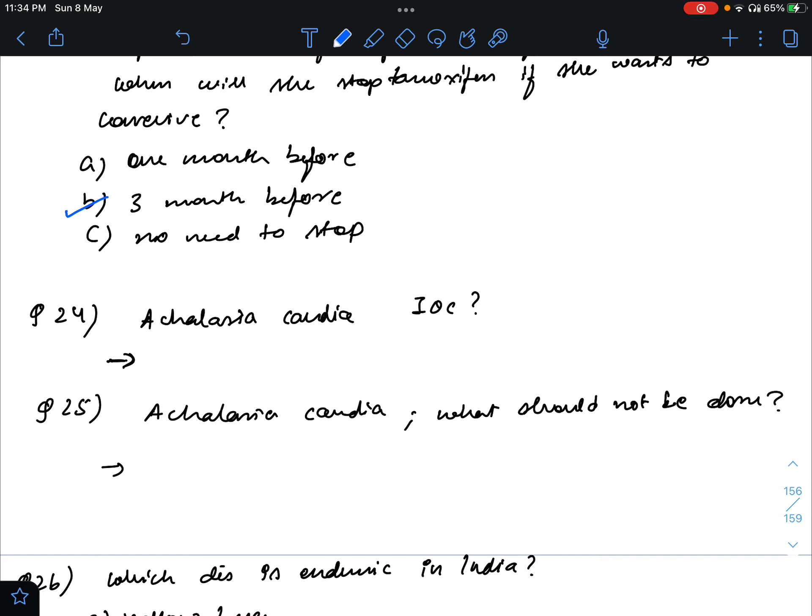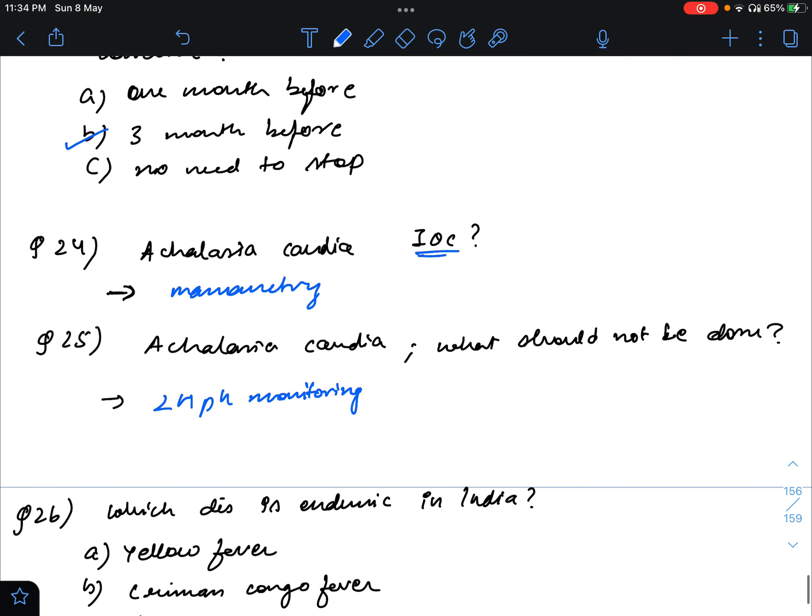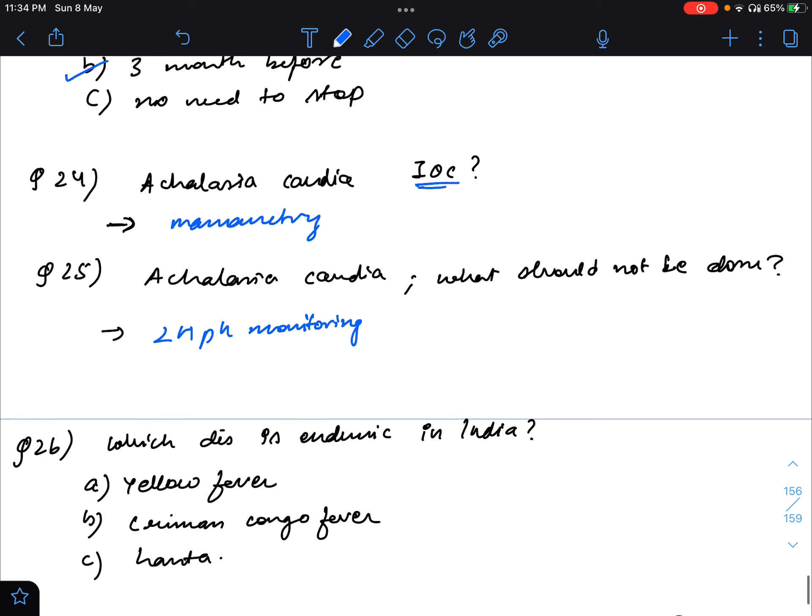So there were two questions on achalasia cardia. Obviously, because this is an important topic and commonly asked. So investigation of choice is manometry. Manometry will be the investigation of choice. And another question was what should not be done? Among the options were manometry, then timed barium, and one option was 24-hour pH monitoring. So that will be the answer. That is not required because that is usually done for gastroesophageal reflux disease and not in achalasia cardia.